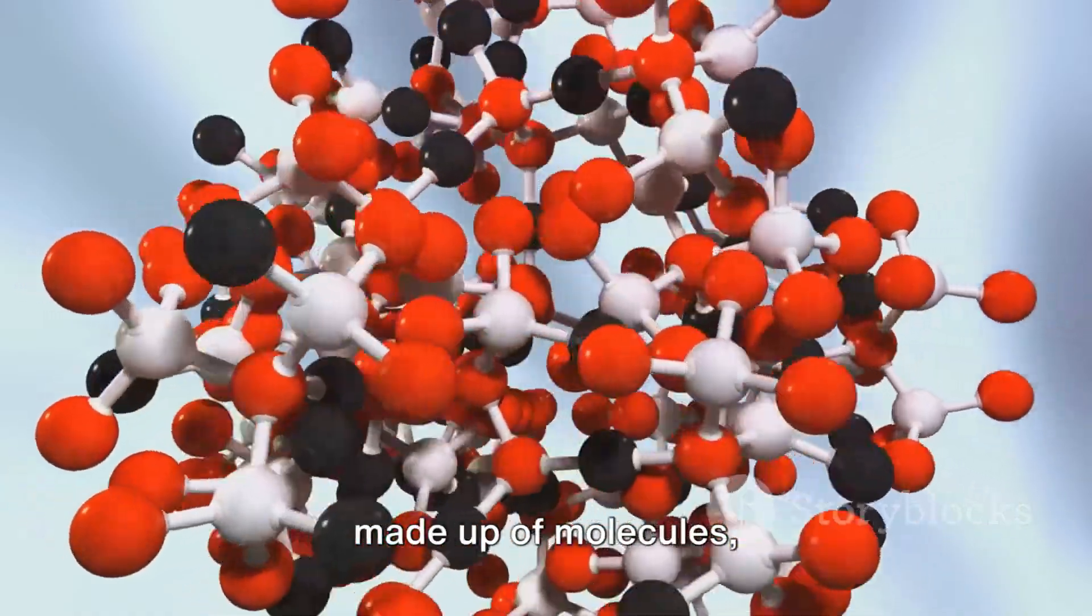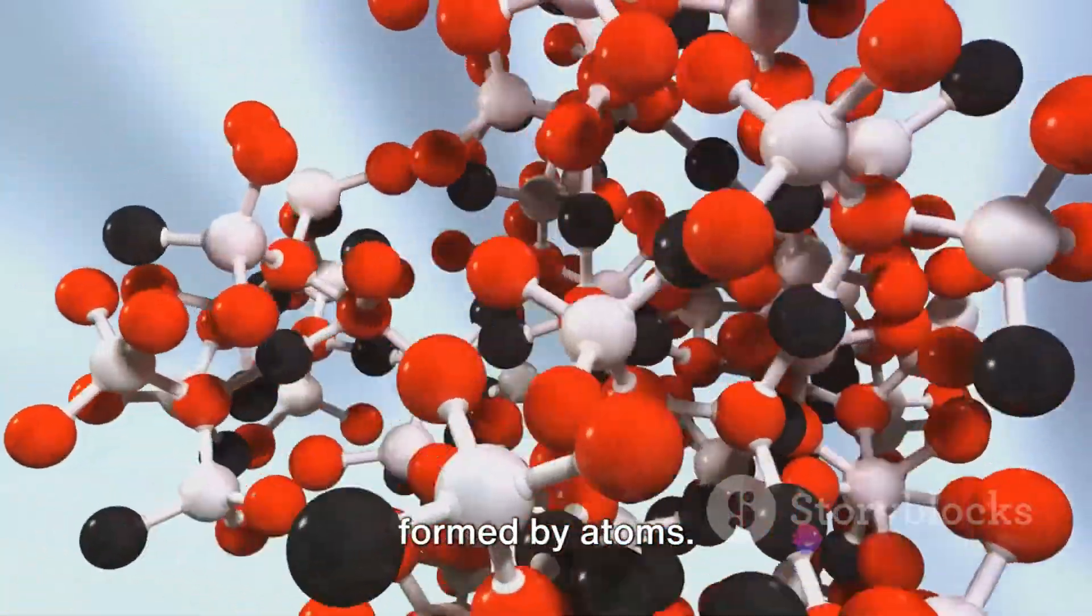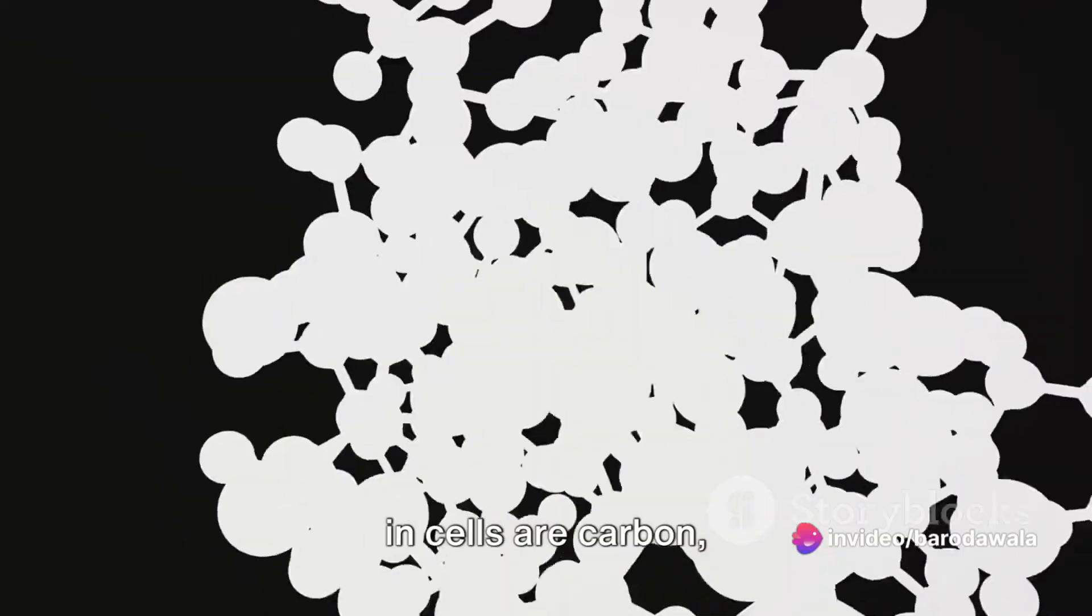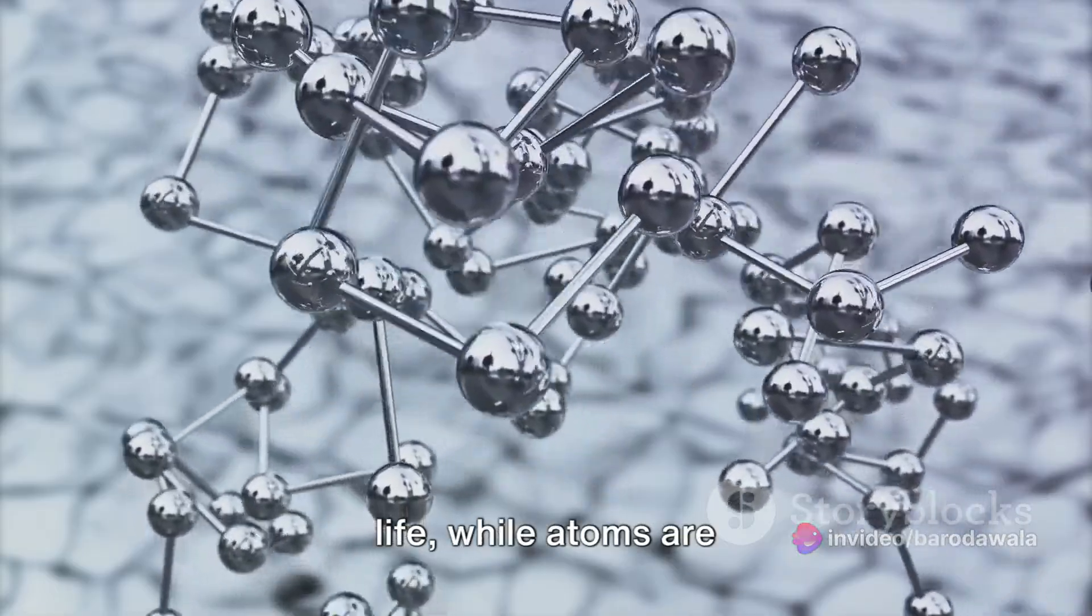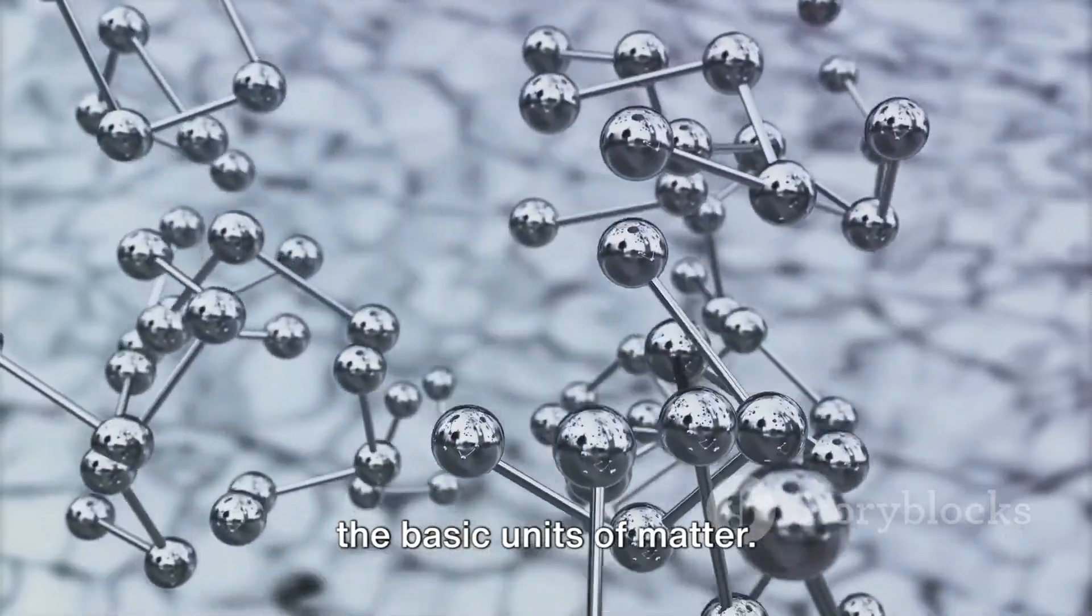And finally, composition. Cells are made up of molecules, which in turn are formed by atoms. The most common atoms in cells are carbon, hydrogen, oxygen, and nitrogen. In essence, cells are the basic units of life, while atoms are the basic units of matter.